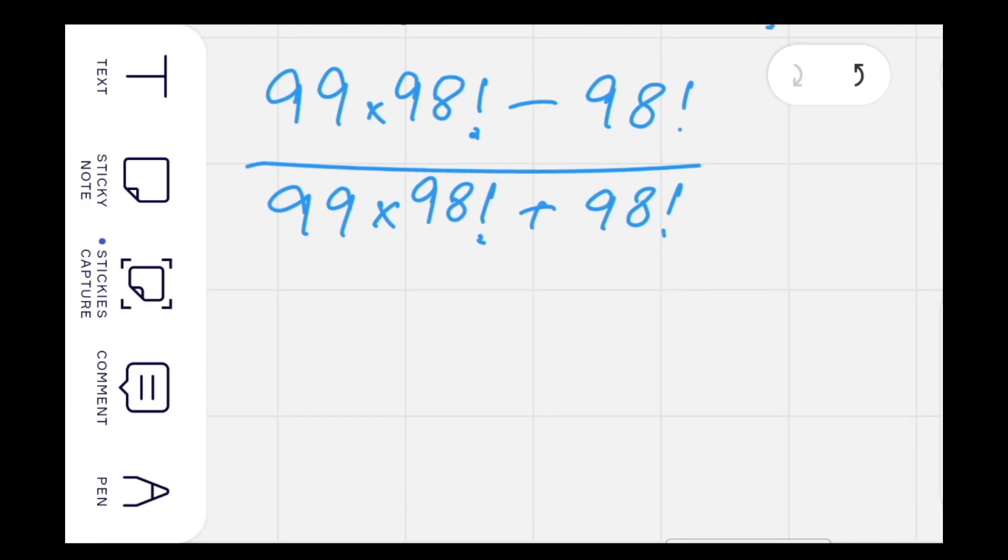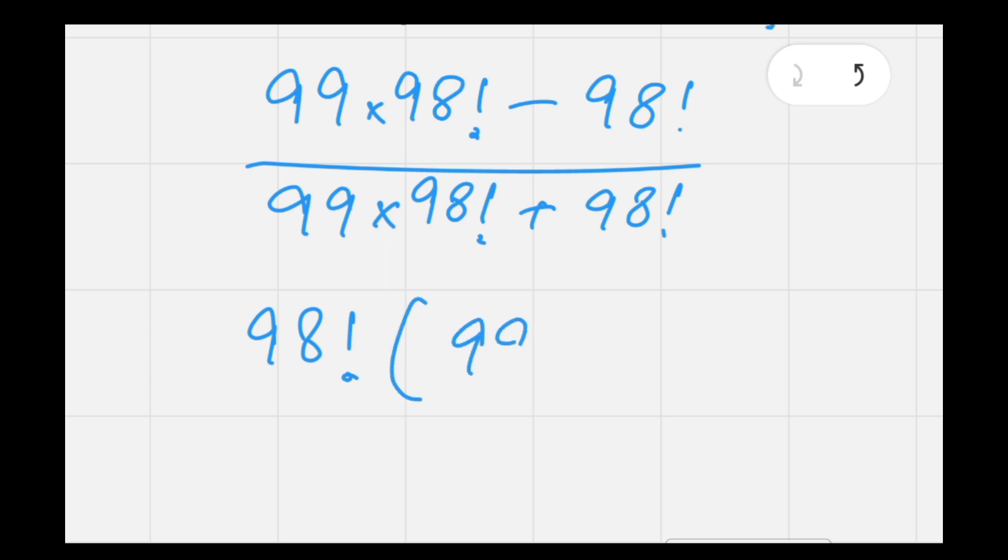Since 98 factorial is common in numerator and denominator, taking it as common from numerator as well as from the denominator.